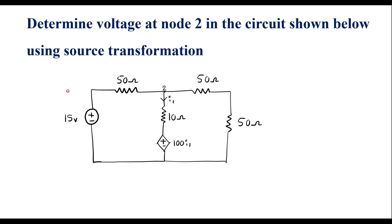In this video, I will consider one numerical on source transformation. Determine voltage at node 2 in the circuit shown below using source transformation. This is the given circuit. Here we have node 2, and we have to find the voltage of this node 2.